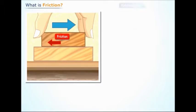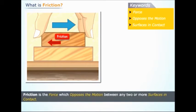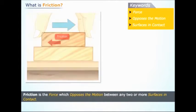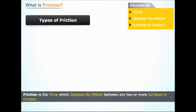Here we are taking two blocks in contact. When we are trying to move the upper block, the static friction starts acting. The static friction tries to oppose the relative motion between the two blocks.